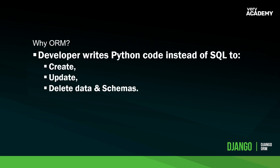So why ORM? Developers write Python code instead of SQL — that's the main benefit initially. As you move through this series, you'll see that writing Python instead of SQL ultimately leads to writing less code in some cases. This follows one of Django's core principles of creating applications very quickly. Using Python instead of SQL can speed up web application development, at least in the beginning.